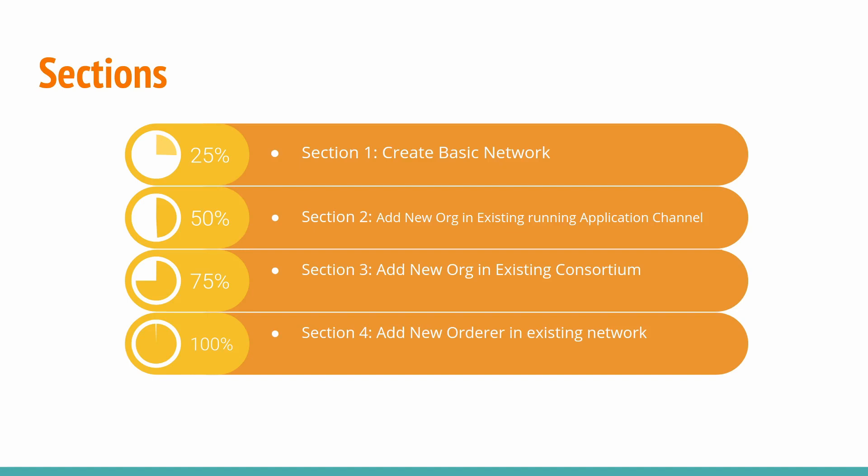To create a channel, the third organization should be part of this consortium. So in Section 3 we will add this organization in the existing consortium, and once we successfully add that new organization we will create a channel with Organization 1 and Organization 3, and invoke some transactions using a smart contract we will install on it.